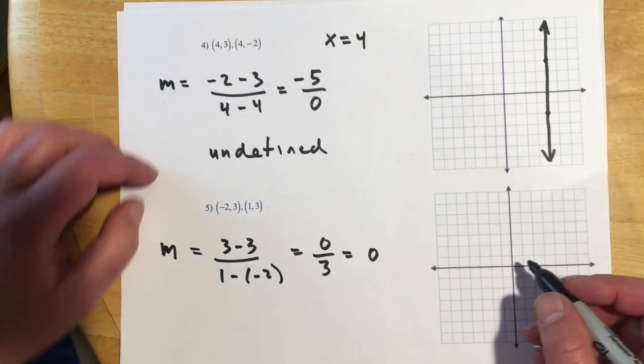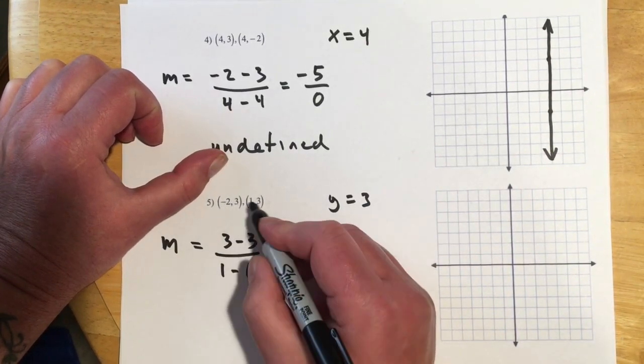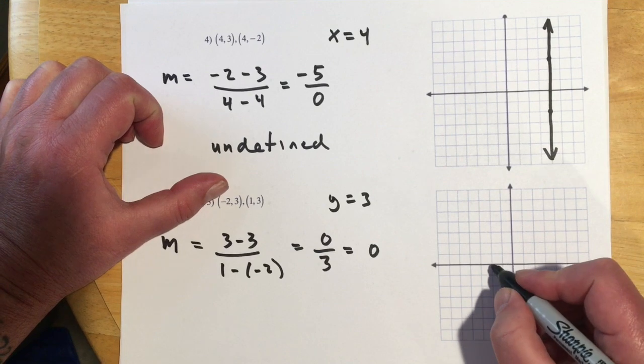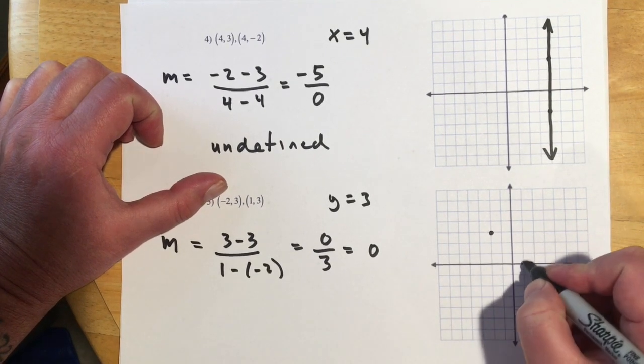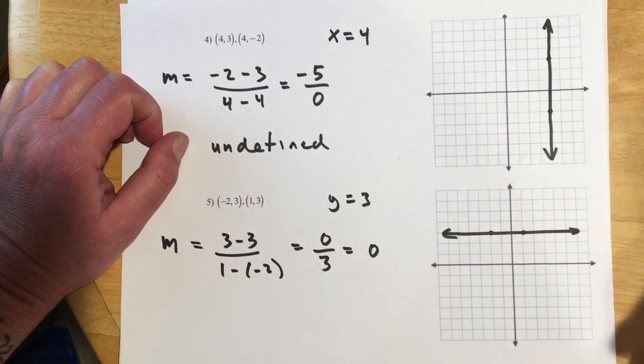Here, m would be 3 minus 3 over 1 minus negative 2, or 0 over 3. Nothing divided by 3 is still nothing, so that one has a slope of 0. And that's going to be another special case. So in this case, it's y equals 3, because y is always 3. So when x is negative 2, y is 3. When x is 1, y is 3.